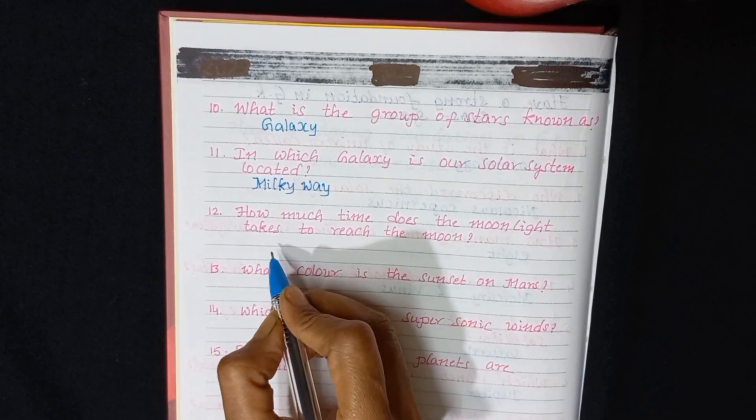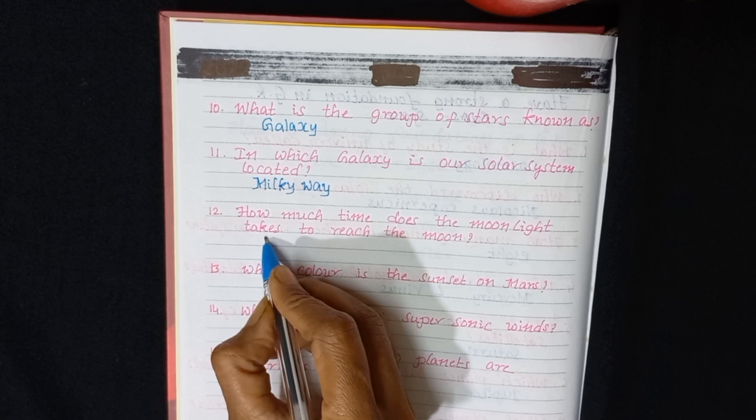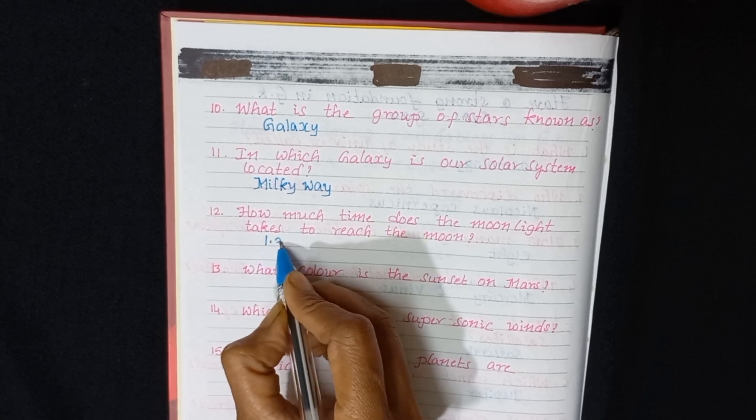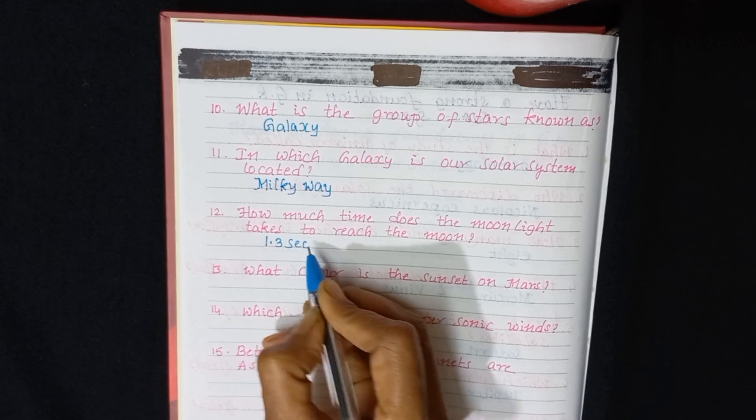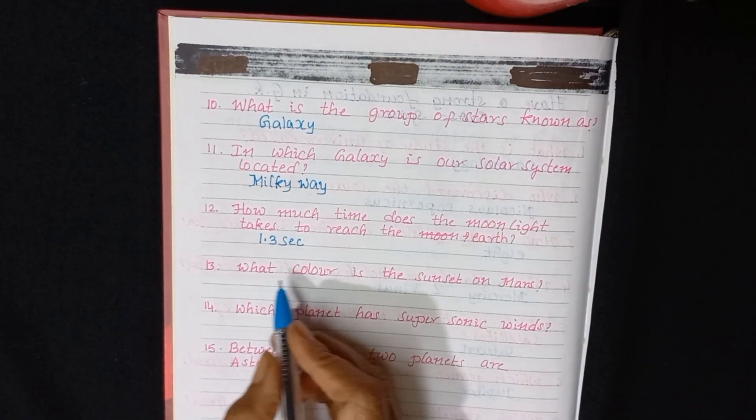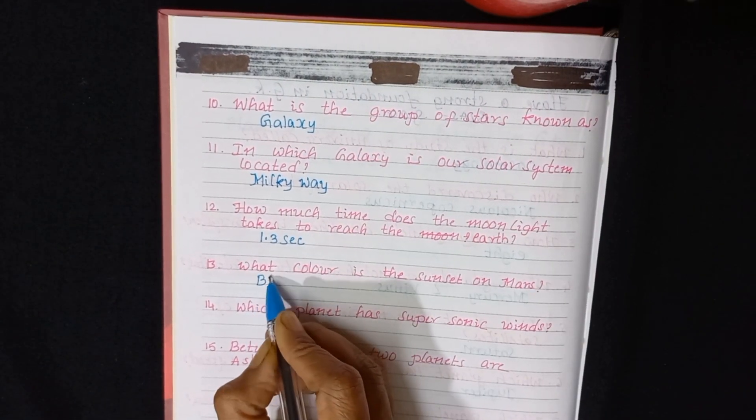How much time does the moonlight take to reach the earth? 1.3 seconds. What color is the sunset on Mars? Blue.